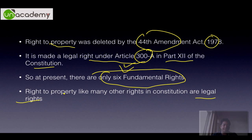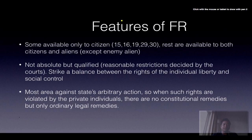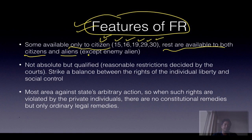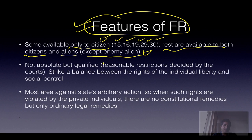Features of fundamental rights: Some are available only to citizens, like Articles 15, 16, 19, 29, and 30 — already covered in the citizenship chapter. The rest are available to both citizens and aliens, except enemy aliens. An enemy alien is a person who is a citizen of a country with which India is currently at war.